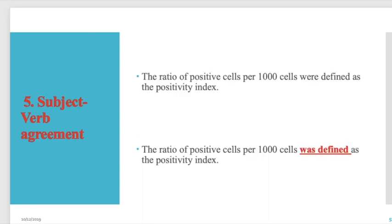Number five is subject-verb agreement. 'The ratio of positive cells per 1000 cells were defined as positivity index' is incorrect. The correct form is: 'The ratio of positive cells per 1000 cells was defined as the positivity index.' This demonstrates proper subject-verb agreement.